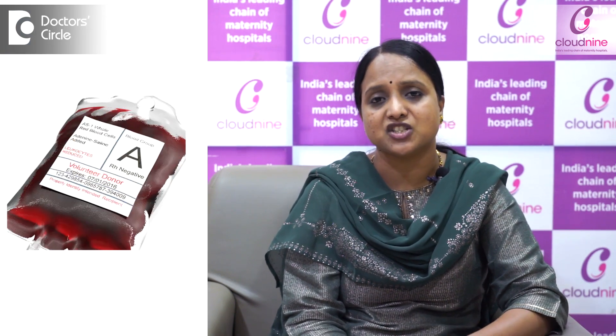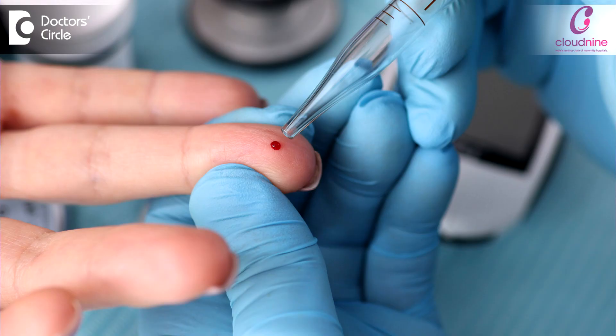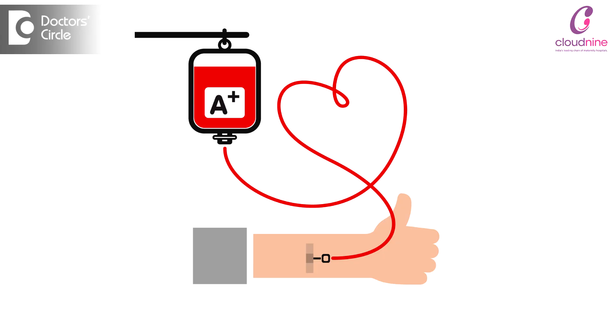Whenever we are doing myomectomy, the risk of bleeding can be there. So we do arrange blood for the patients and check their hemoglobin. It is not that all myomectomy patients need blood transfusion — arranging blood is just for safety. Sometimes if the bleeding is more or any complication occurs, we do transfuse the blood.